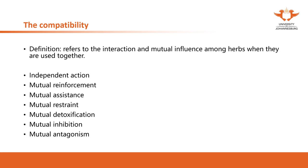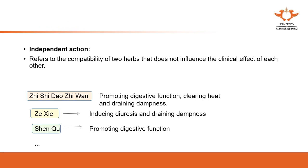Do the points act independently? Do they mutually reinforce? Do they provide mutual assistance? Or do they inhibit each other? These are all things you need to consider. Independent action refers to the compatibility of two herbs that do not influence the clinical effects of each other — meaning you use these two together, but they act according to their own function, with no interaction between them.